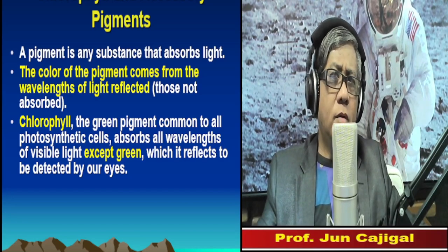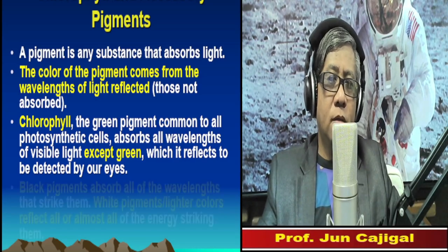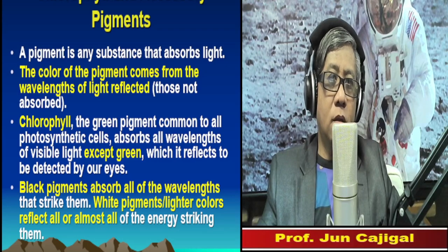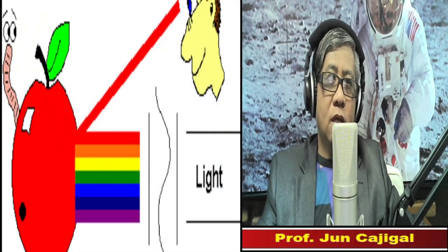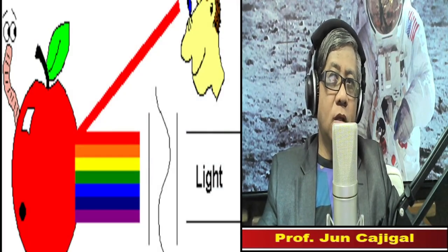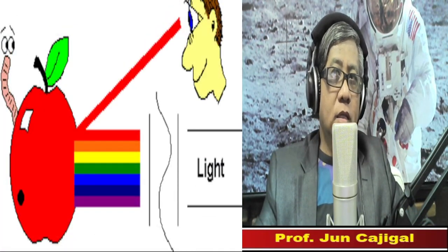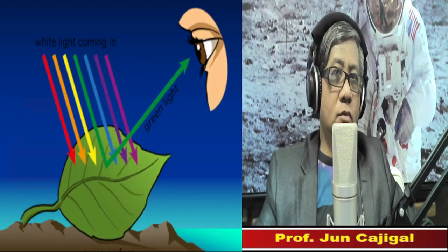Black pigments absorb all of the wavelengths that strike them, while white pigments reflect all or almost all of the energy striking them. Chlorophyll, being a green pigment, absorbs most of the energy from the sun except green, which is reflected back and detected by our eyes. For example, a red apple absorbs most wavelengths of visible light except red; red is reflected back and detected by our eyes.